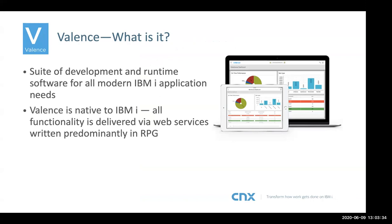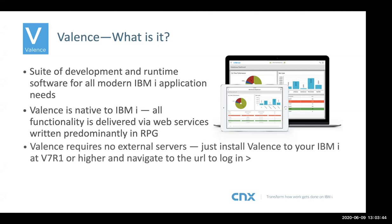All the functionality is delivered via web services, and those services are written predominantly in RPG. You can see on the right some pictures of what a Valence screen may look like. Valence requires no external servers. I include this in presentations because I get a lot of questions after demos — people ask where is the Windows server hiding, or what special equipment do you need? There is nothing. You just install Valence to your IBMI — you have to be on 7.1 or higher — and then navigate to a URL in your browser and you're in.